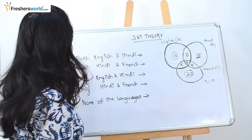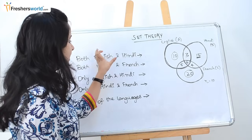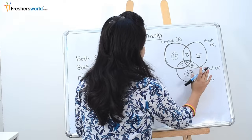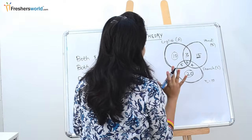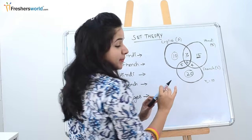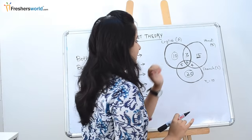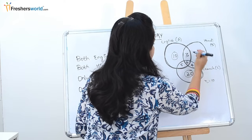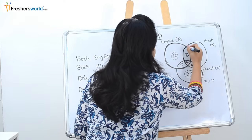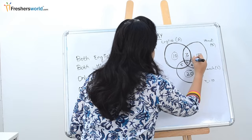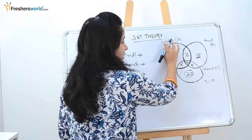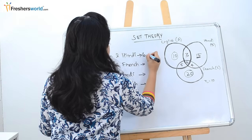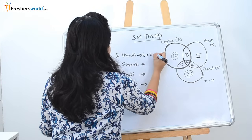The next question is asking about both English and Hindi. Looking at circle A and circle B, we are identifying the people who know both English and Hindi. These are the people who know only English, and these are the people who know only Hindi. So the answer here will be 6 plus 3, which is 9.